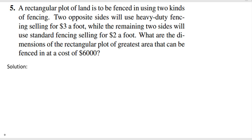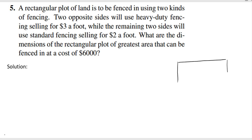This question says a rectangular plot of land is to be fenced in using two kinds of fences. We have a rectangular region where two opposite sides will use heavy-duty fence. These two sides are labeled x, and the cost is 3 dollars per foot.